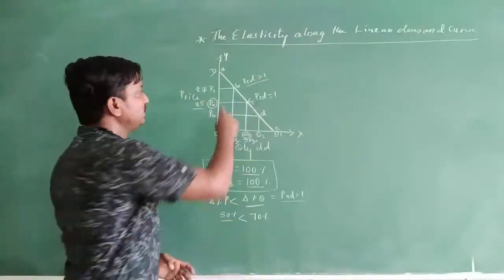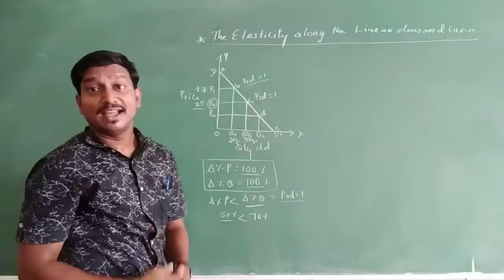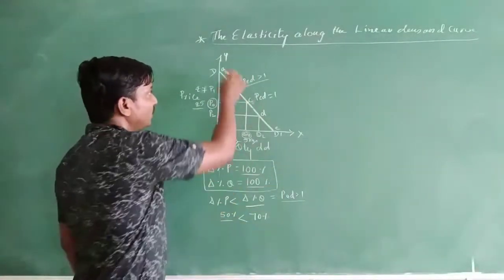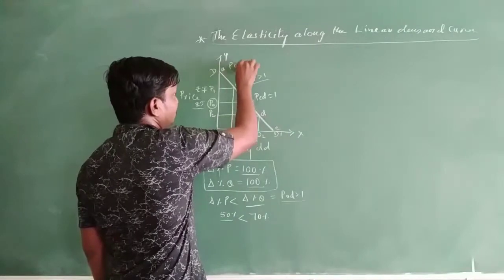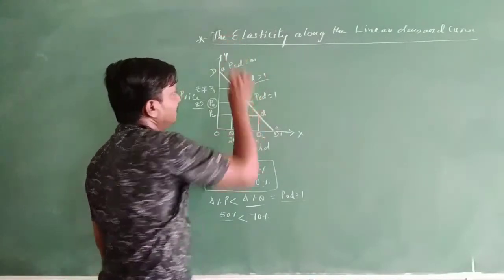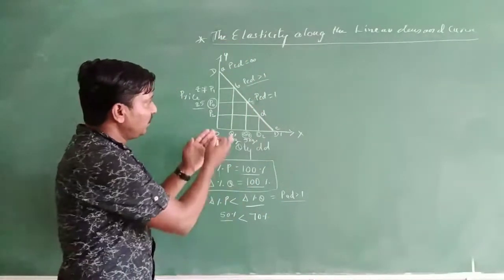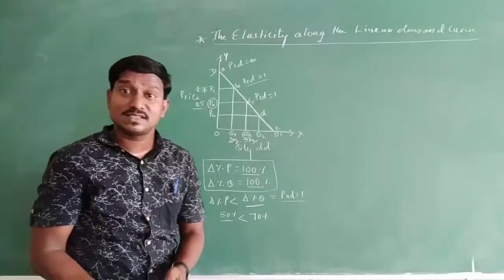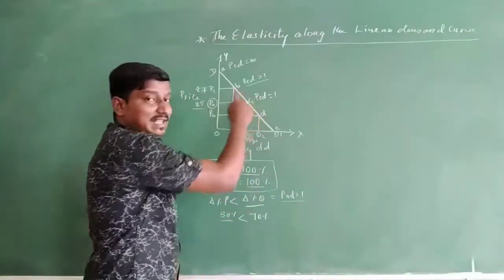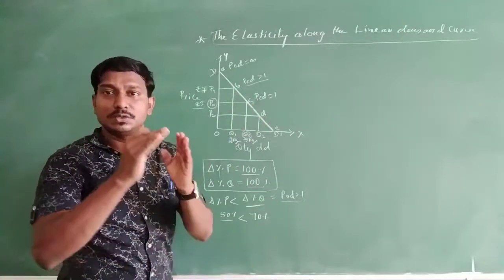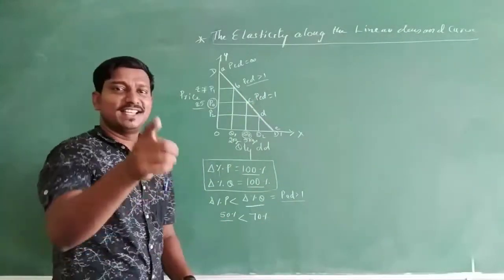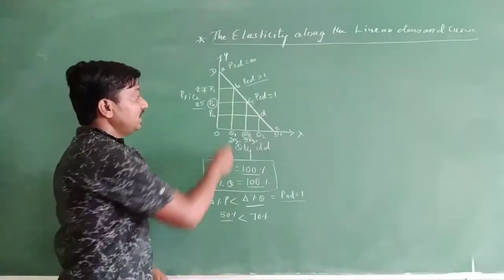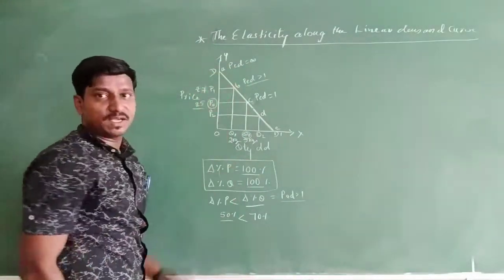If the price increases even further beyond this point, whatever may be the price, the quantity demand comes to infinity. As the demand curve moves further upside from the basic point, the price elasticity of demand is going to be greater than 1, and if the price increases still further, the price elasticity of demand goes to infinity.